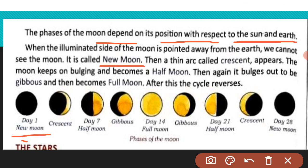The phases of the moon in sequence are: new moon, then a thin arc called crescent, then it grows into a half moon, then gibbous, and then becomes a full moon. After full moon, it again appears to shrink back to a half moon shape.